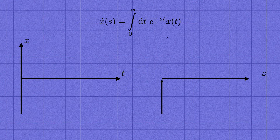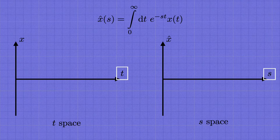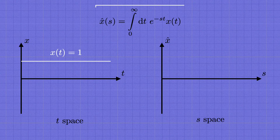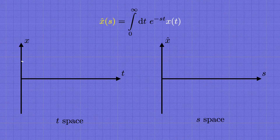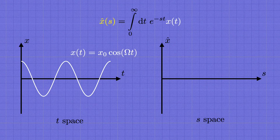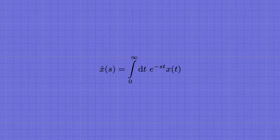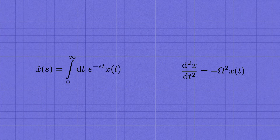The Laplace transform is an instruction to take our position function x of t, multiply it by e to the minus st with some new variable called s, and then integrate that over t from 0 to infinity — we'll call that x hat of s. The way you should think about it is that we have two spaces: t space, where our original function x of t lives, and s space, where its Laplace transform lives. For example, if x of t equals 1, its Laplace transform is 1 over s. For our block on a spring, x of t equals x zero cosine omega t, and its Laplace transform is the rational function x zero times s divided by s squared plus omega squared.